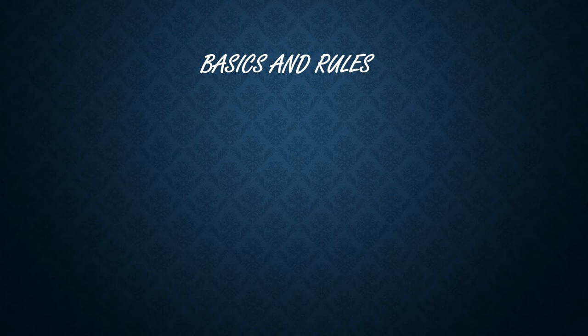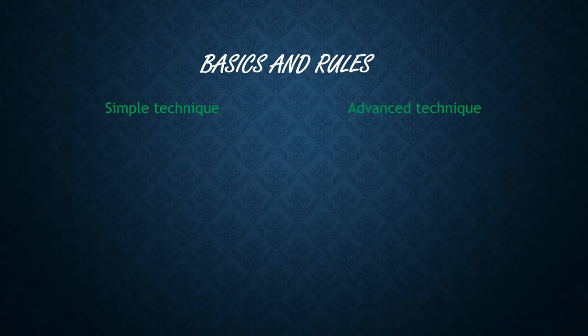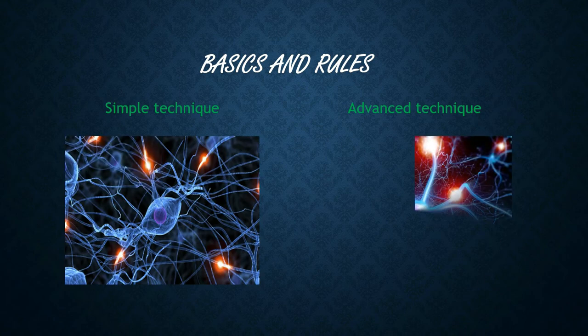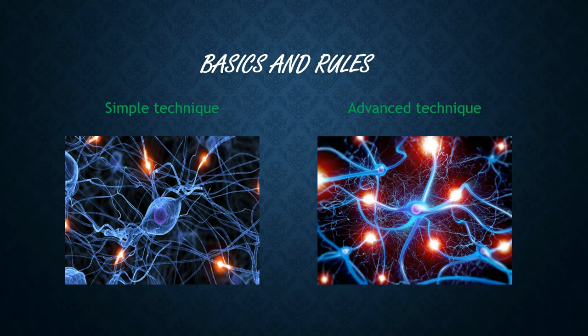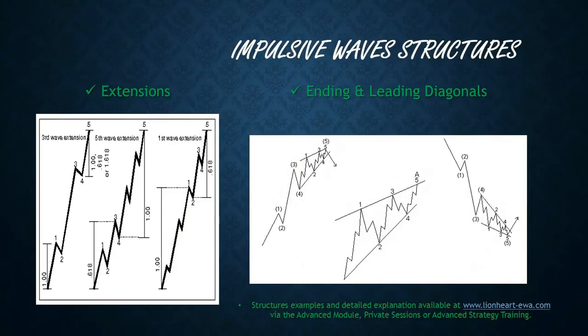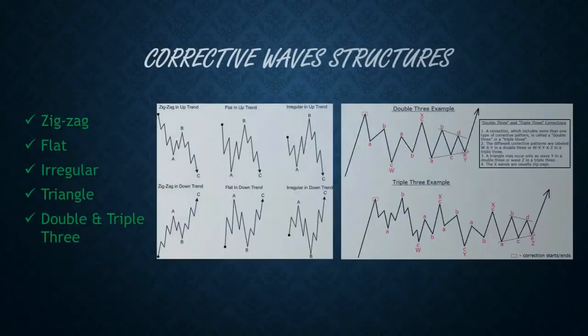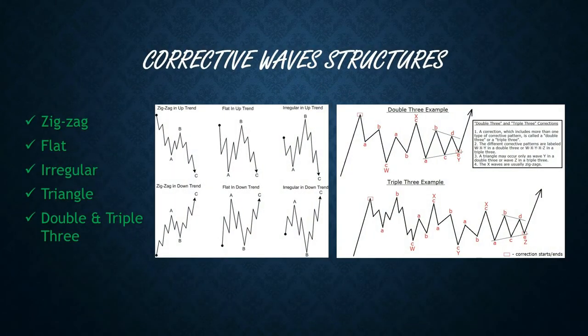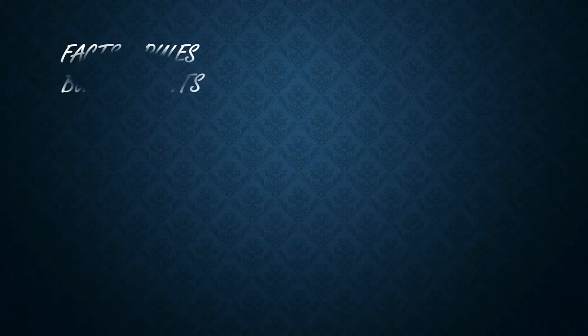There are two choices when applying the Elliott wave theory on your charts and counting the waves: simple and advanced. The simple technique implies counting the waves normally, and the advanced implies going more technical and recognizing the impulsive or corrective structure types. Impulsive or motive waves come in three types: extensions, ending, and leading diagonals. Corrective waves, however, come in five: zigzags, flats, triangles, double and triple threes. We will start with a simple approach and then move towards the advanced one. Time for facts, rules and bullet points.